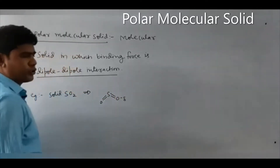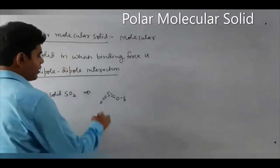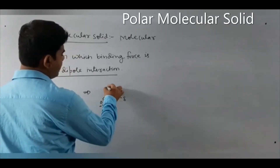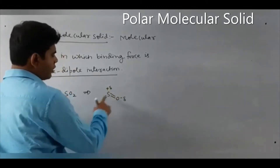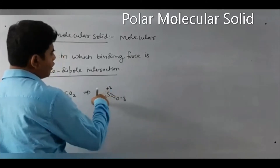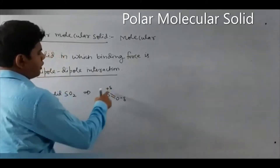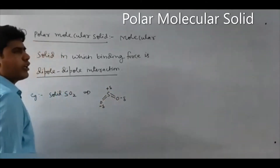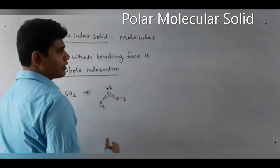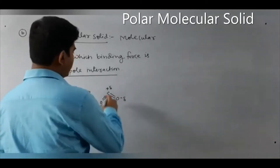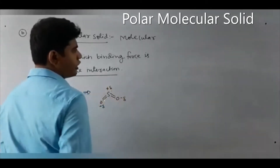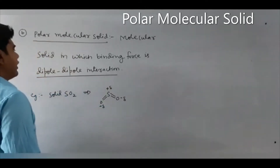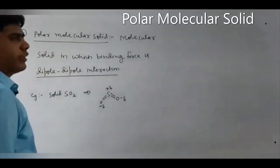This makes the oxygen end slightly negative, and the sulfur end carries a positive charge. So a dipole is created — a positive and negative charge developed at the two ends. Dipole means two poles: this plus-minus charge arrangement forms a dipole.